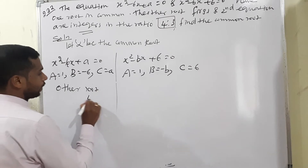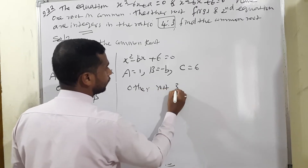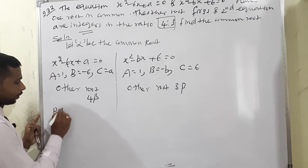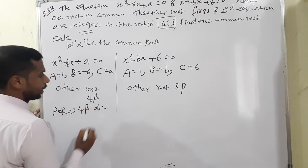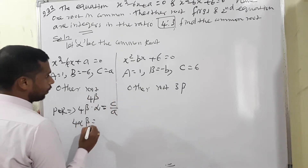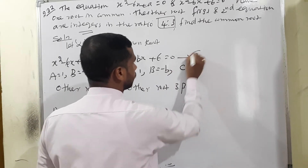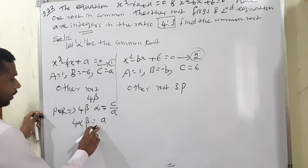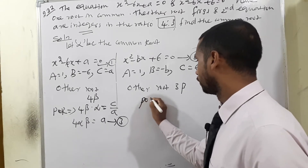The other root of the first equation is considered as 4·beta and of the second as 3·beta. Using the product of roots formula: alpha × 4·beta = C/A = a/1. Therefore, 4·alpha·beta = a. This is equation number 3.